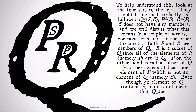P, on the other hand, is not a subset of Q, since there exists at least one element of P which is not an element of Q — namely S. Even though an element of Q, P, does contain S, it doesn't mean that Q does. Because Q doesn't contain S, P is an element of Q but not a subset of Q.